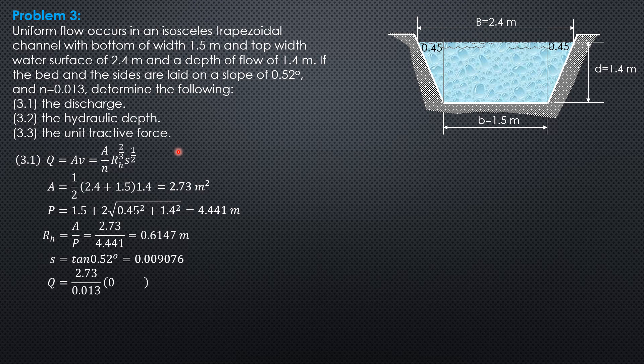Substitute into the formula, Q is 2.73 over 0.013, 0.6147 to the 2/3, then 0.009076 to the 1/2. So the discharge is 14.46 cubic meters per second.